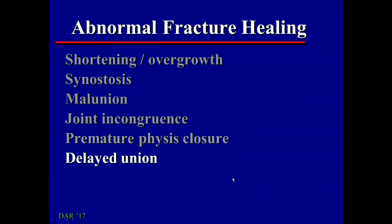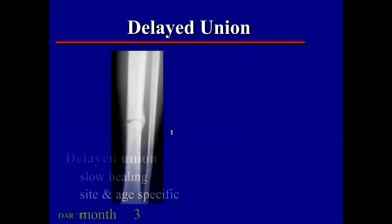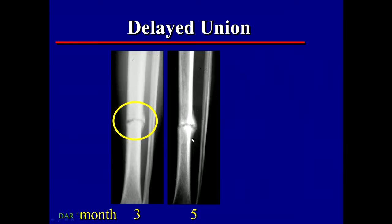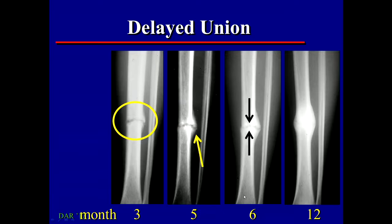Delayed union means a fracture that's healing more slowly than we expect, and this is both site and age specific. Here's a fracture of the tibia — at three months, we still have a pretty big fracture gap. At five months, we still have that same fracture gap, yet we're still developing more callus formation. As long as on sequential films you see progression of callus formation, we don't have a non-union yet — it may be slow, but it can still heal. At six months the fracture is starting to close off, and at 12 months it went ahead and healed correctly.